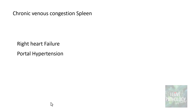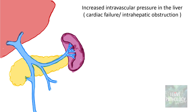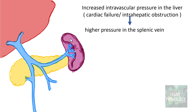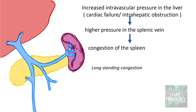Moving on to another important organ affected by right heart failure and systemic venous congestion — chronic venous congestion of the spleen. The most common causes of CVC spleen are right heart failure and portal hypertension, where there is increased intravascular pressure in the liver. The second cause could be intrahepatic obstruction, leading to increased pressure in the splenic vein. More pressure is transmitted via the portal vein into the splenic vein, thereby leading to congestion of the spleen.